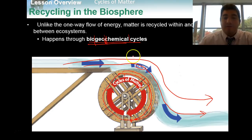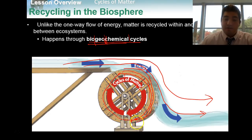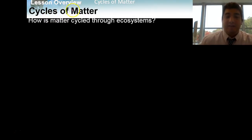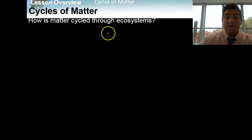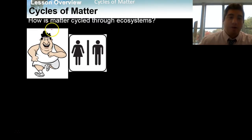So if you want to think about it this way, energy would be like the water that powers the water wheel. Energy powers the cycles of matter, whereas the matter itself — the stuff, the nutrients, the elements — keeps going around in circles from producer to consumer. There are four ways matter is actually cycled through the ecosystem. The first one is through biological processes.